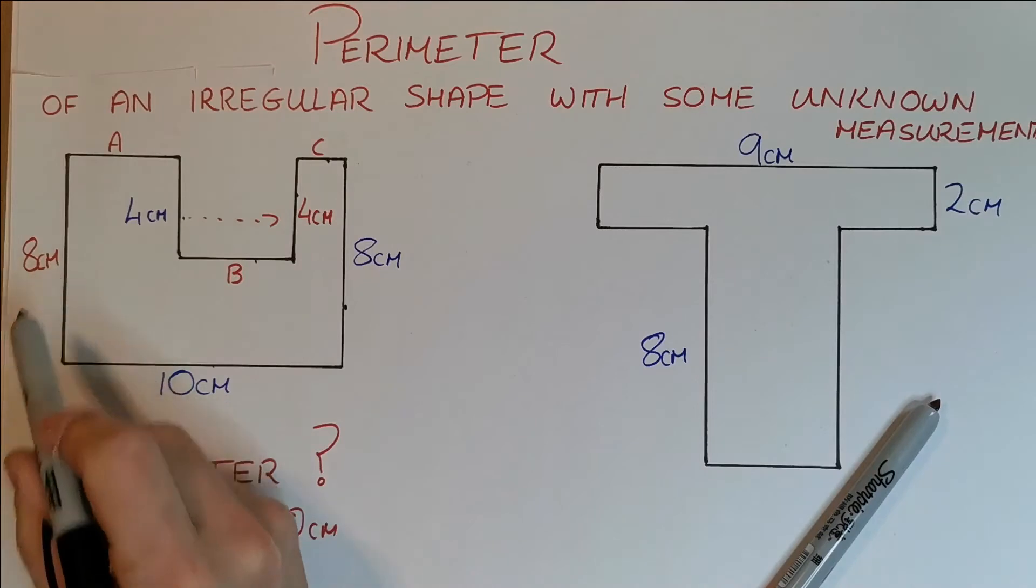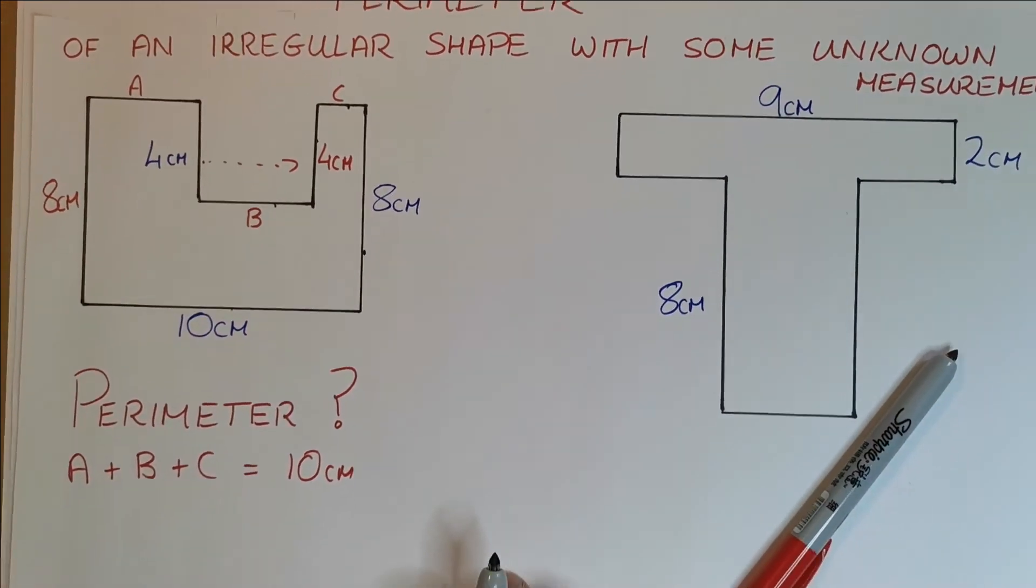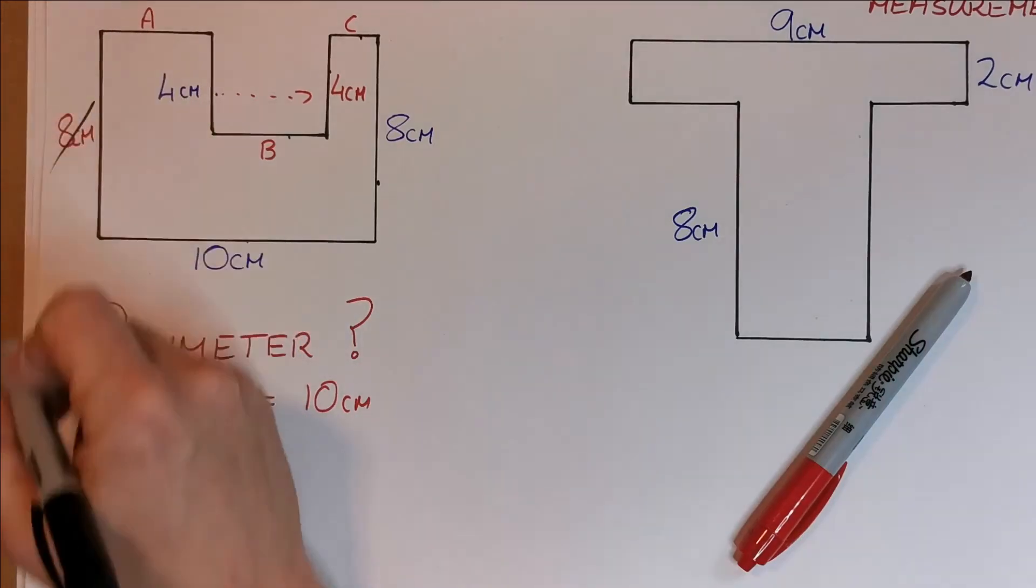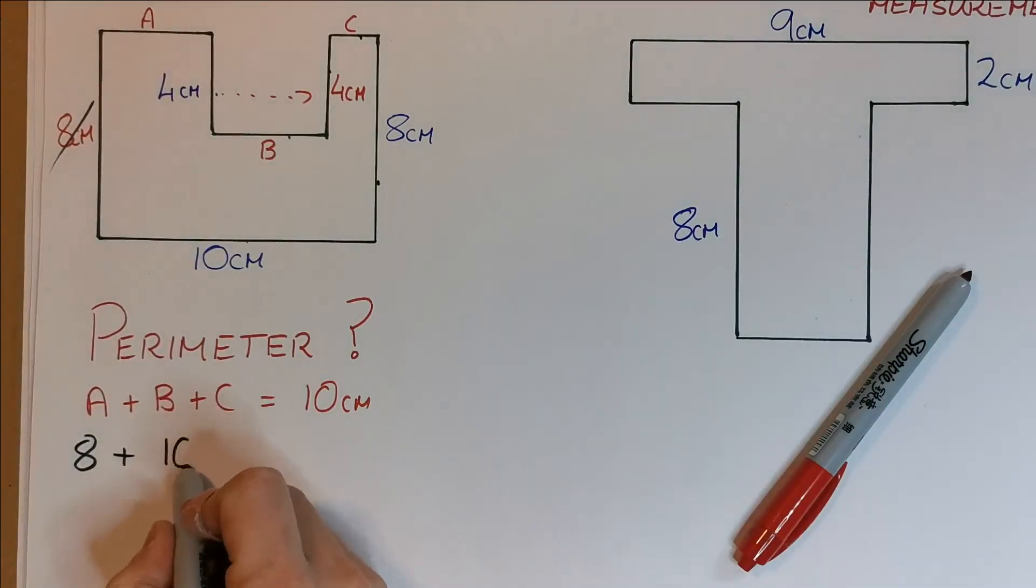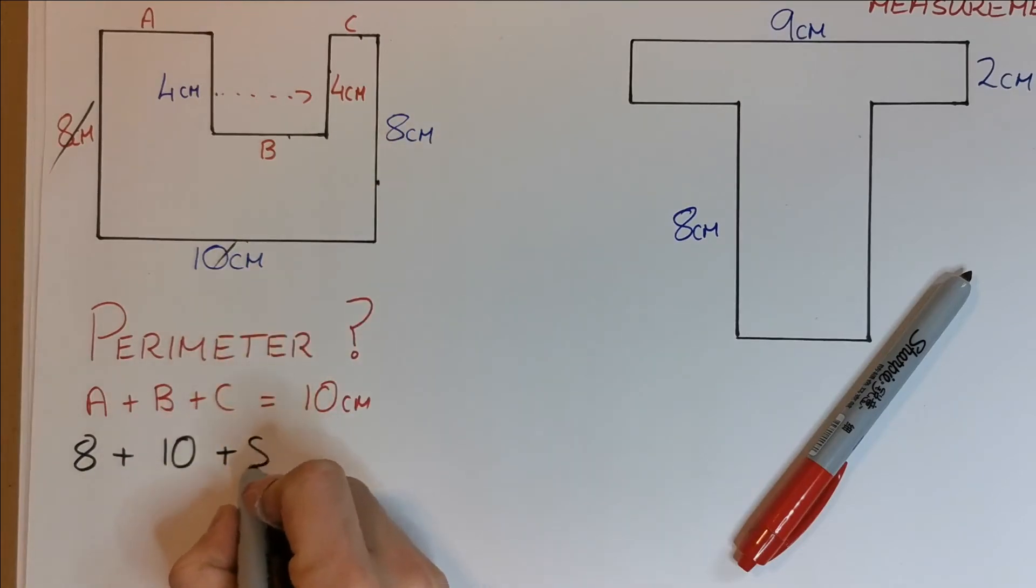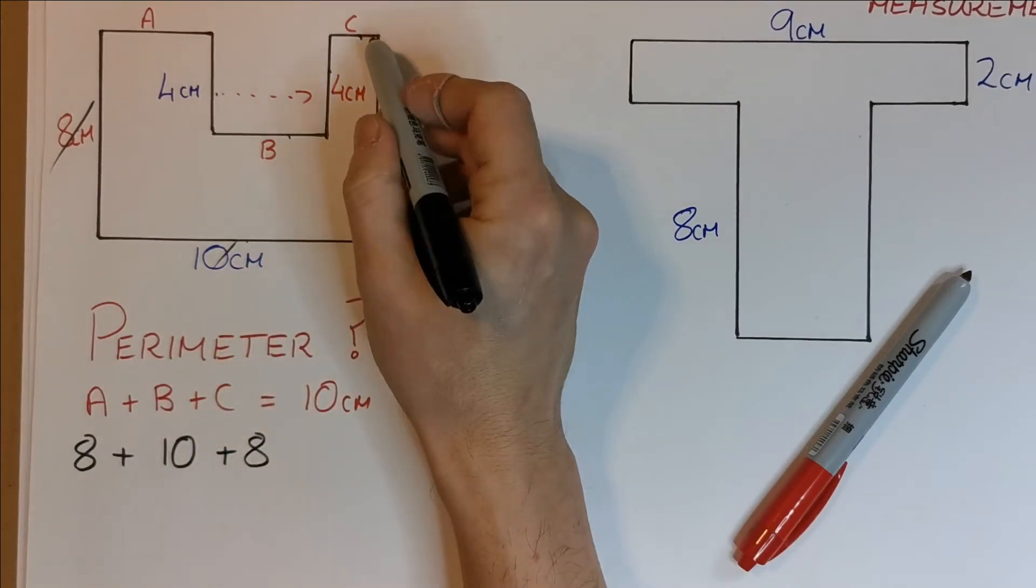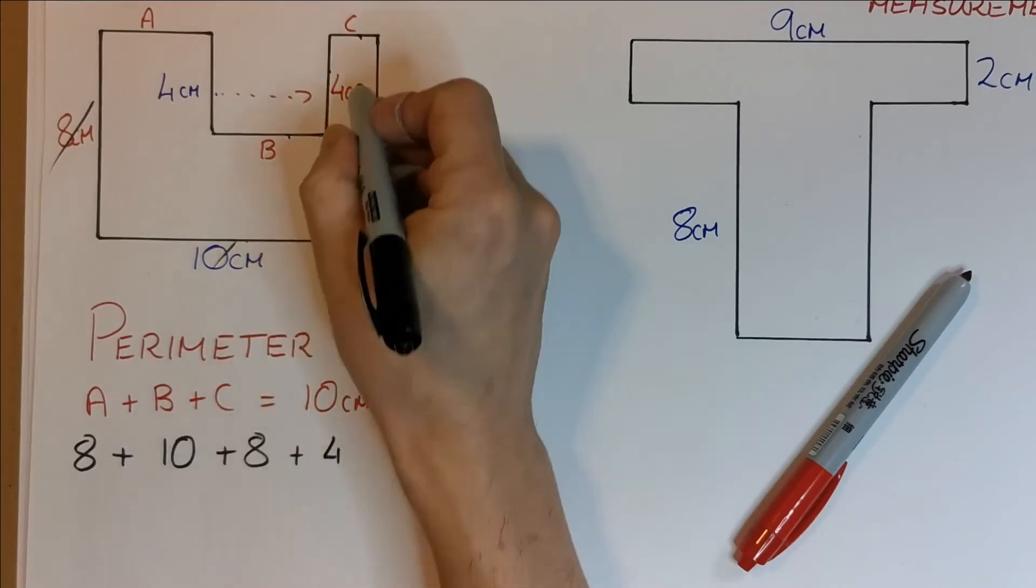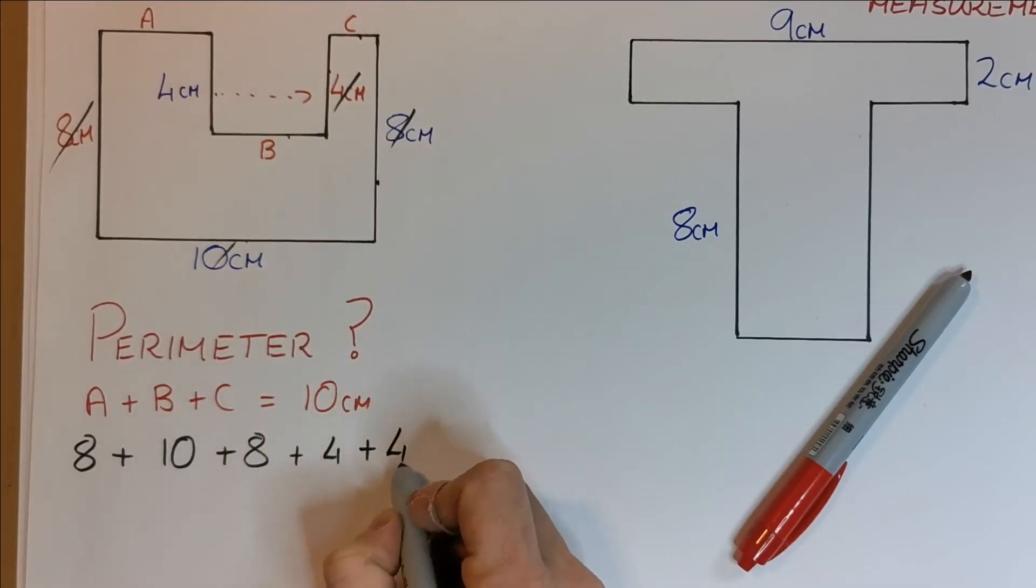So if I start from this 8cm here to get the perimeter, let's go with 8, that's this one done, plus 10, this one done, plus another 8, that one done. Now I don't know C, and I don't know B and I don't know A yet, but I have these other two 4s, plus this 4, plus this 4.